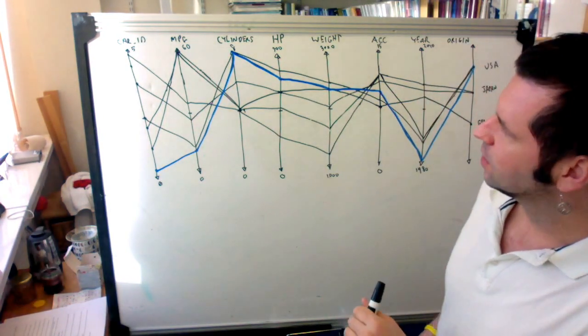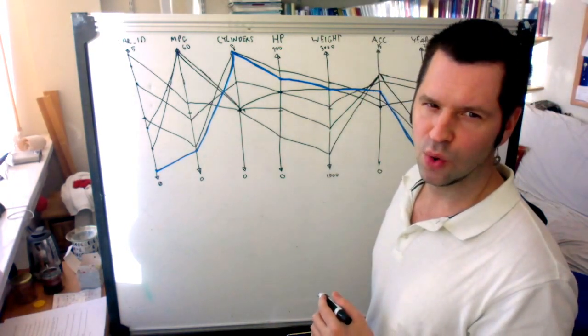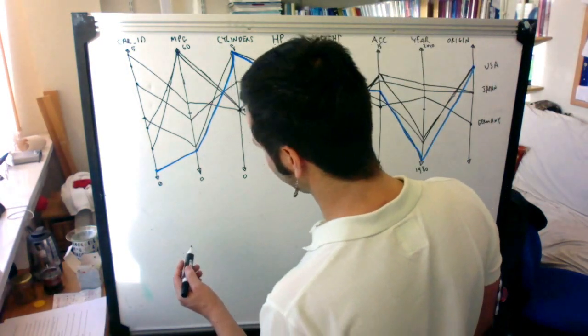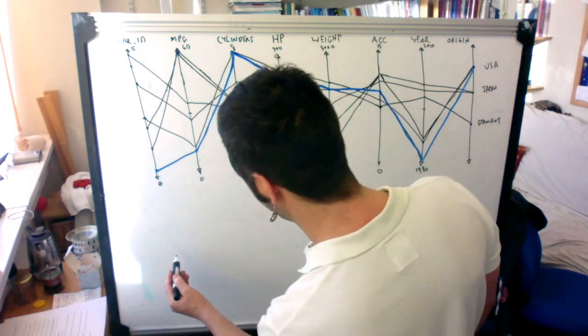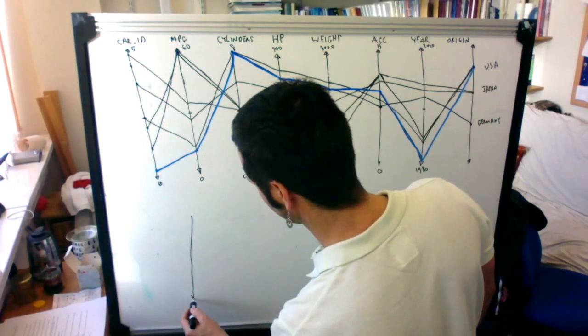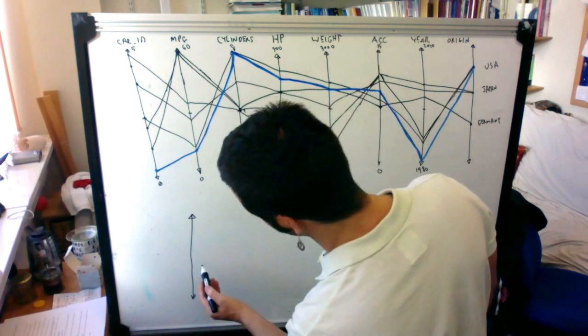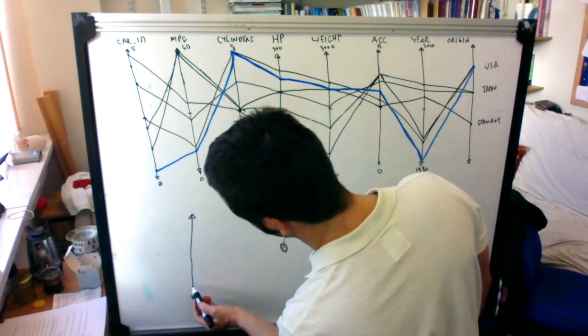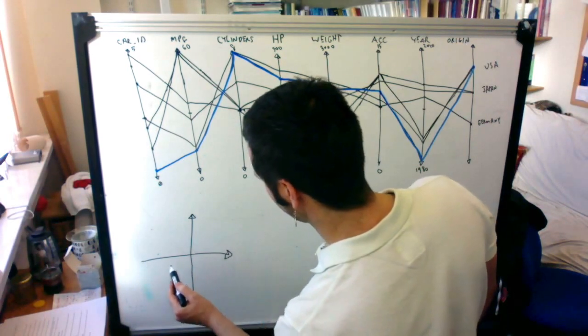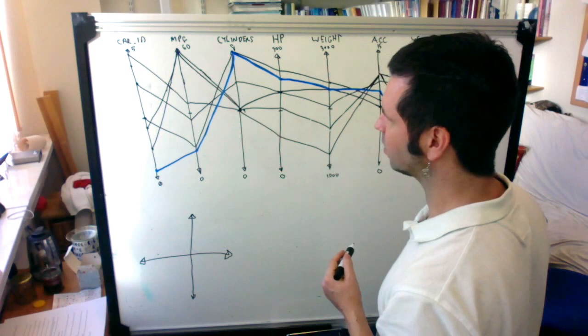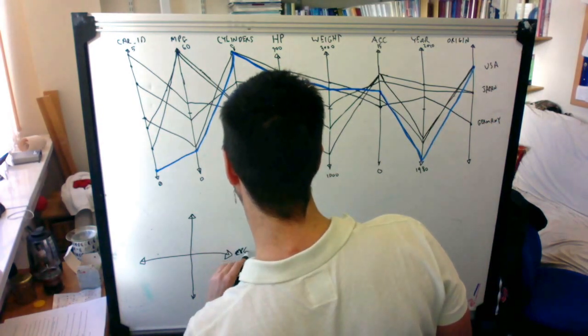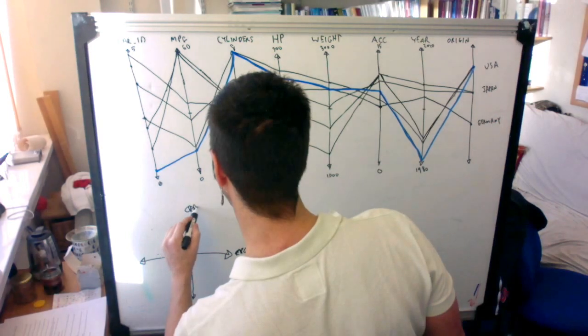So you can take any two axes and just put them on an old-fashioned scatterplot. Scatterplots are also called Cartesian plots. So we can take an axis, for example, car ID, and we can draw it like this. And then we have from zero to five, say, one, two, three, four, five. And then we can take the miles per gallon axis and draw it here, for example. This is not the only correct solution. So this is miles per gallon, and this is car ID.